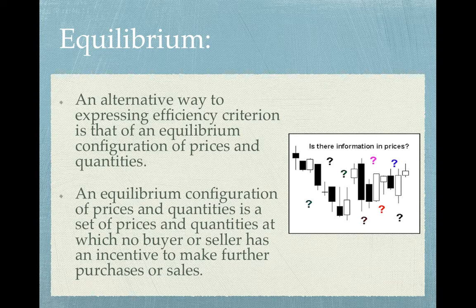You can also think about equilibrium as a traffic jam on congested highways. People often move from one lane to another thinking they might go faster. But everybody is trying to do that, and if everybody does it, ultimately all the lanes move at the same speed. That is again an equilibrium configuration — no driver has an incentive to move from one lane to another. An equilibrium configuration of prices and quantities is similar: no seller or buyer would have an incentive to make any changes to their purchases or sales.